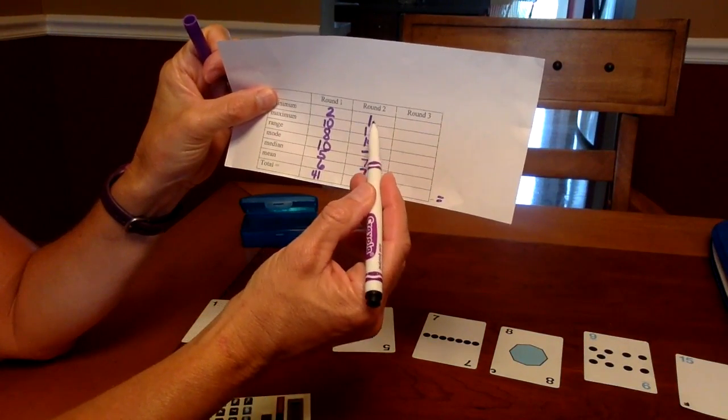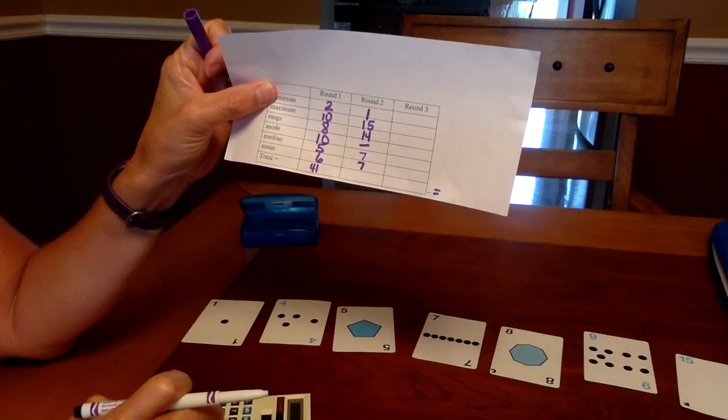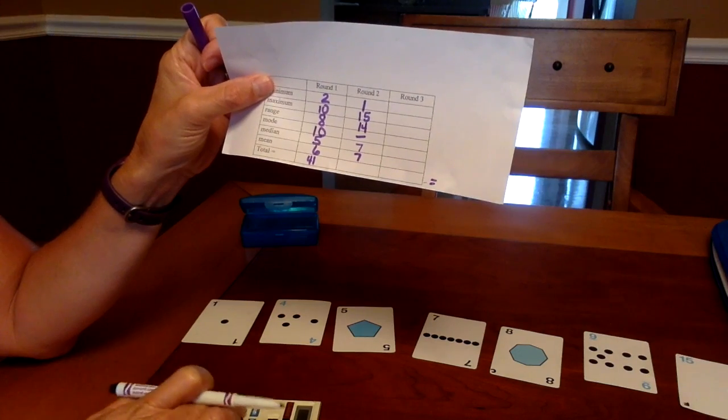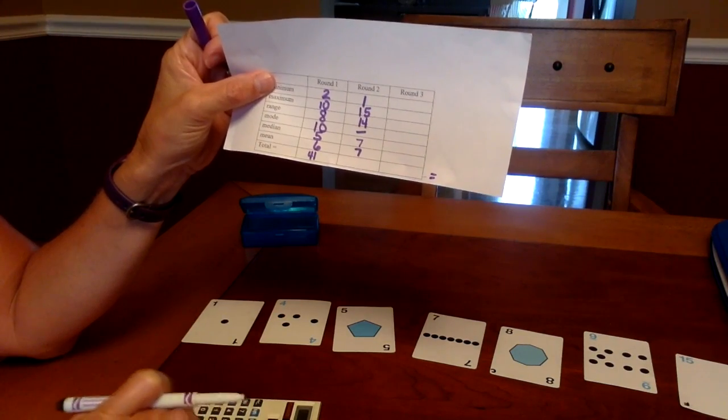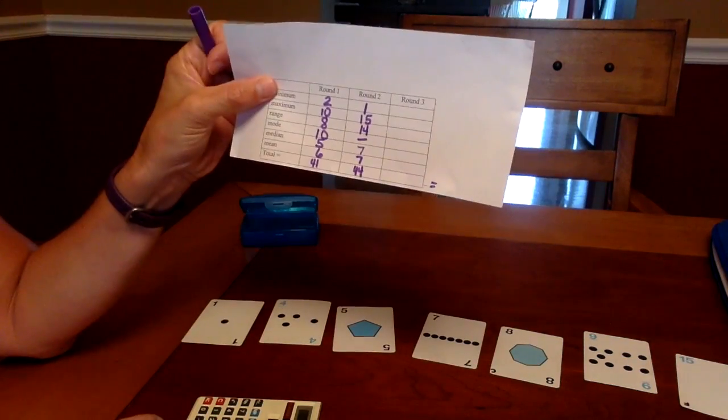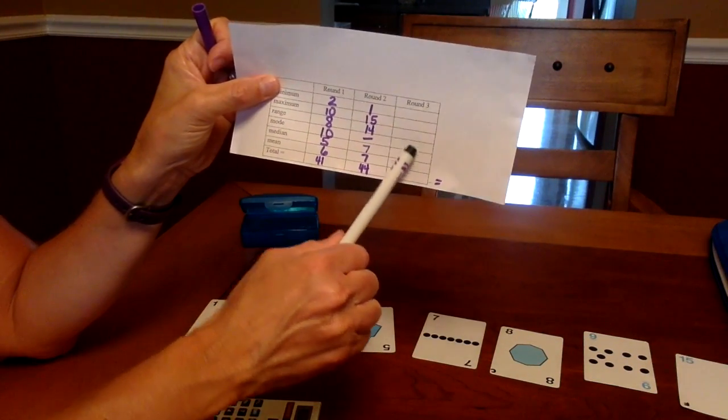My last step in this round is to add up all of the points I have. So 1 plus 15 plus 14 plus 7 plus 7 equals 44. So for this round I have 44. I would continue one more round.